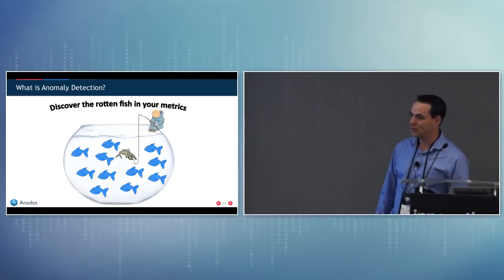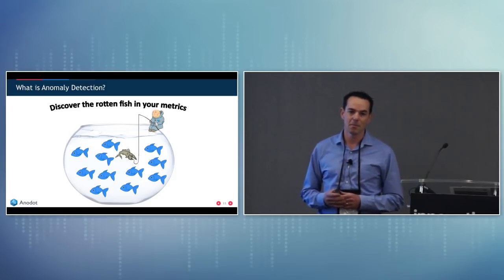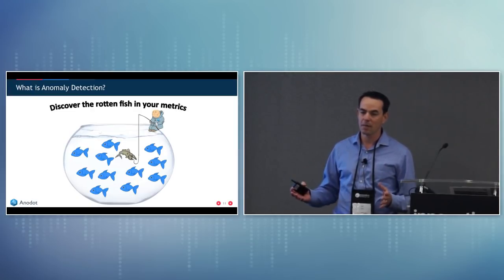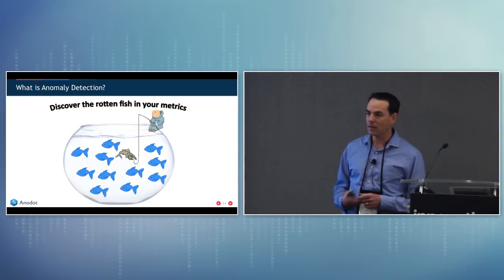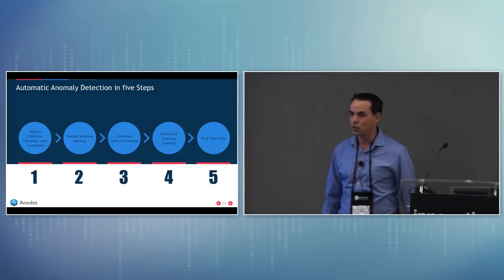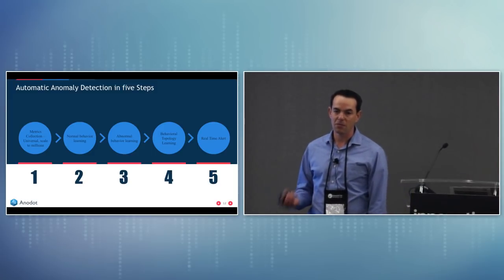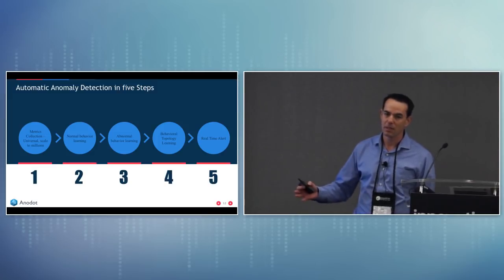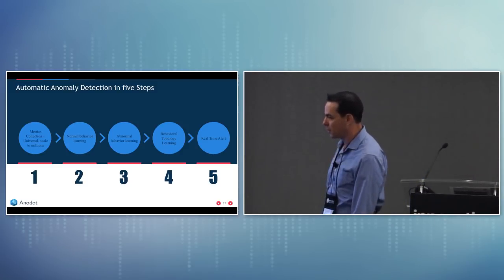What is anomaly detection? At a very high level, anomaly detection is the method where you analyze the normal behavior of all your data across time, and understand when something deviates from normal — then alert on that in real time. There are five steps to implement an anomaly detection system: metric collection, normal behavior learning, abnormal behavior learning, topology behavior learning, and real-time alert. I'll explain each step and how Best Buy could have used this system to avoid that situation.